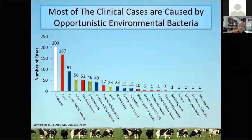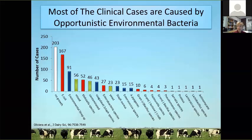When we went to these 51 farms, we asked them to enroll the next 15 cases of clinical mastitis that occurred, take sterile milk samples, and submit them to our laboratory. So we found out what was causing the mastitis. Most of the cases of clinical mastitis on these dairies were caused by opportunistic environmental bacteria. In fact, the most common result of the milk samples was no growth.